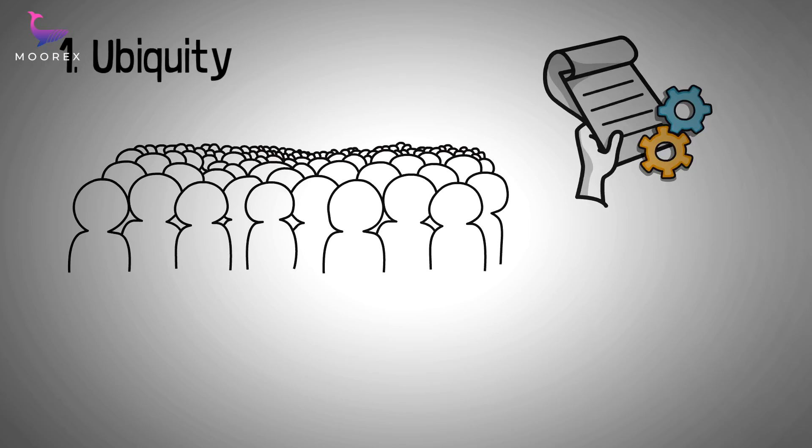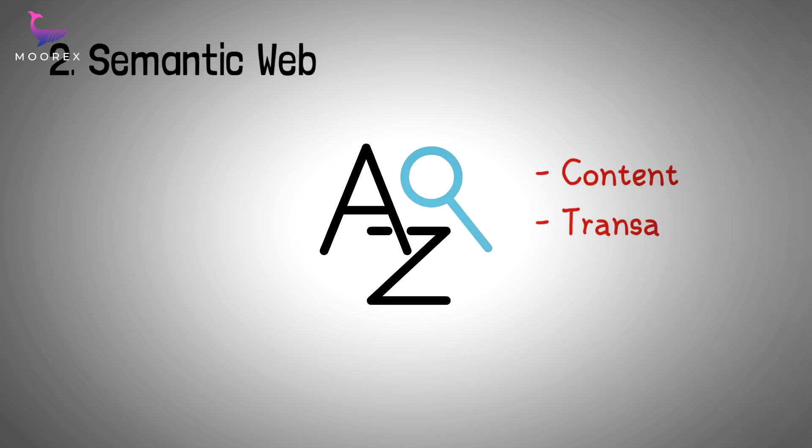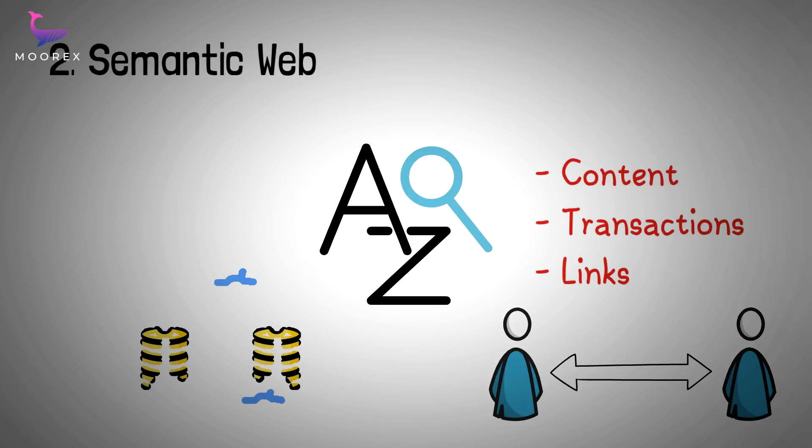Four key features of Web 3.0. Number one, ubiquity: having the capacity to be everywhere at the same time. Number two, semantic web: having the ability to analyze all forms of data, including content, transactions and links between persons, producing an enhanced data connectivity.